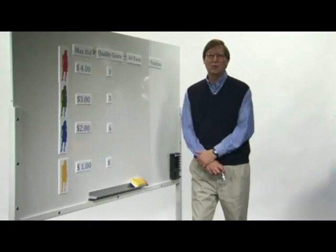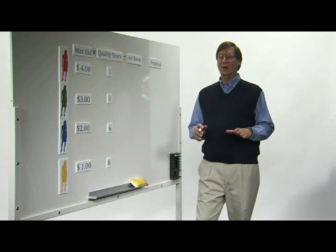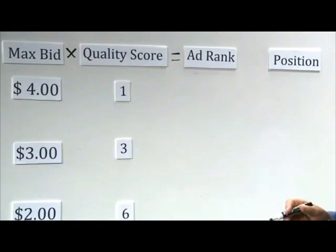So how does this quality score affect the way the auctions run? What we do is we have a concept of ad rank. An ad rank is going to be the bid of the advertiser times the quality of the ad.